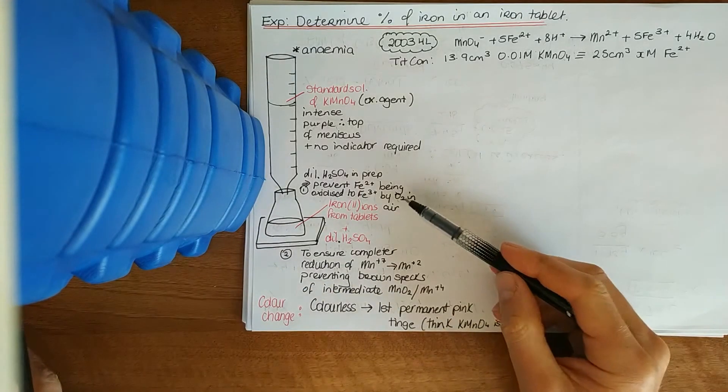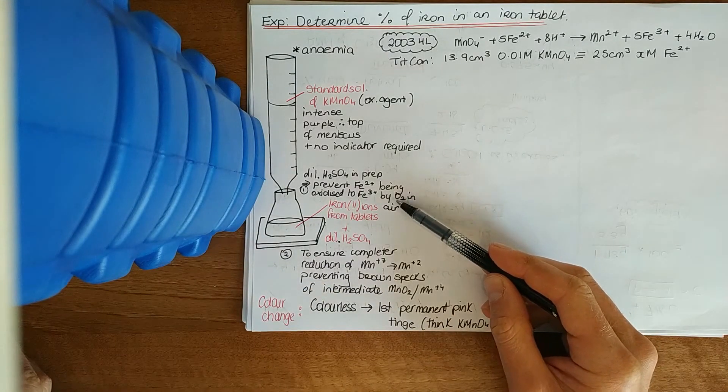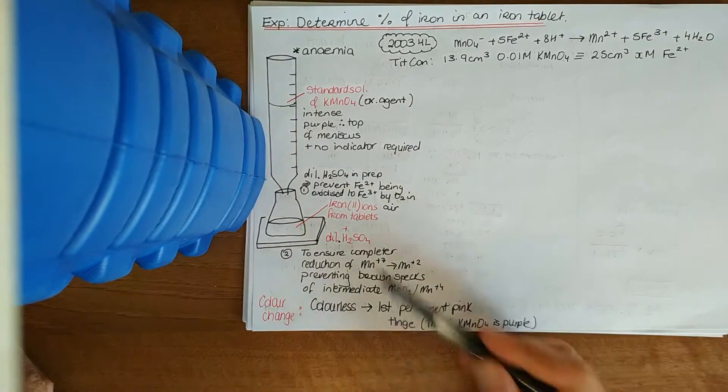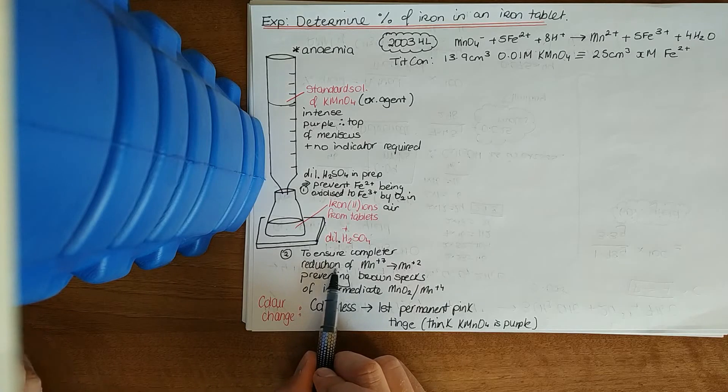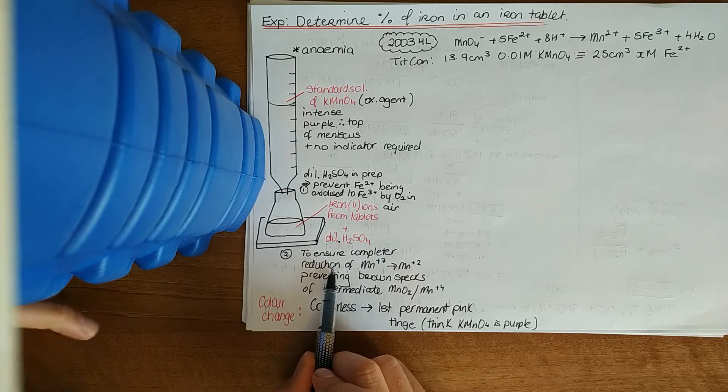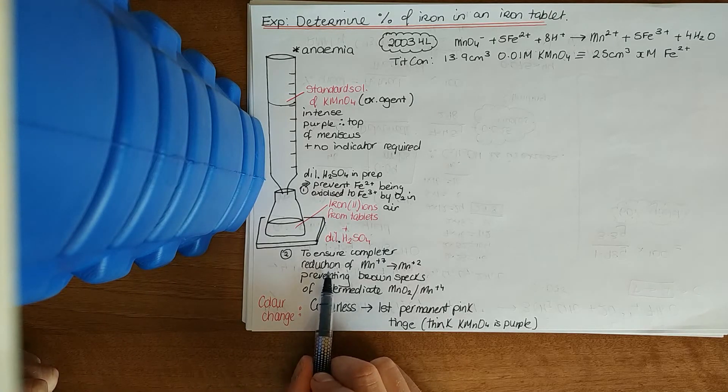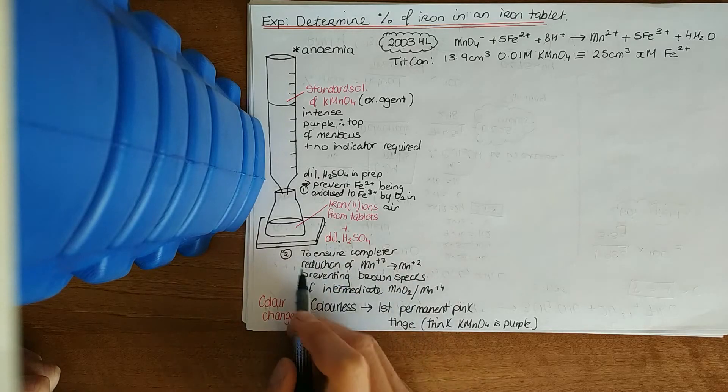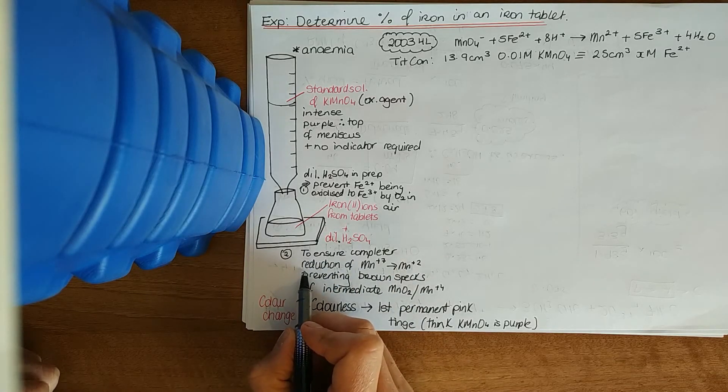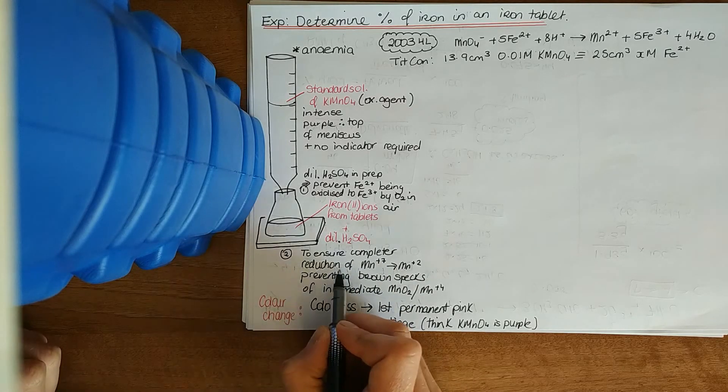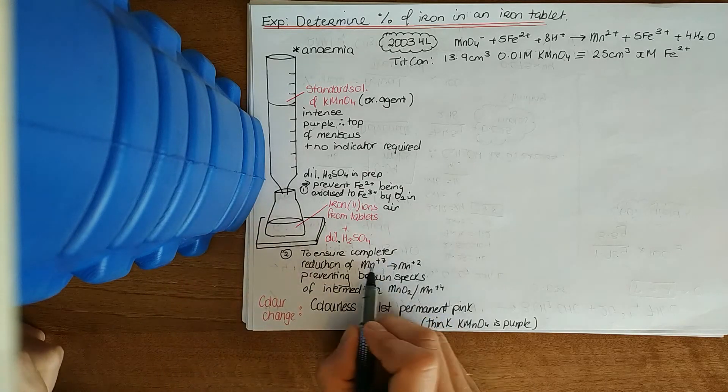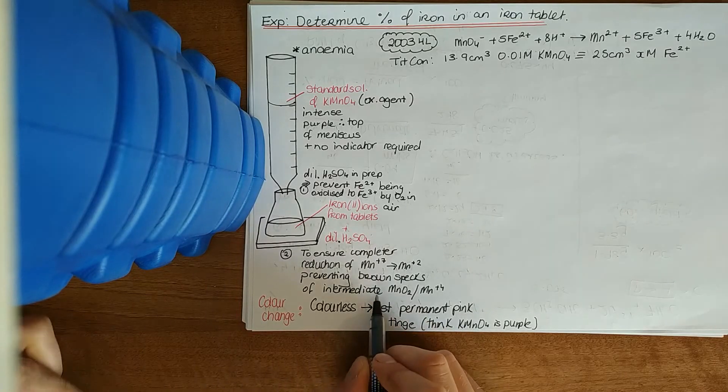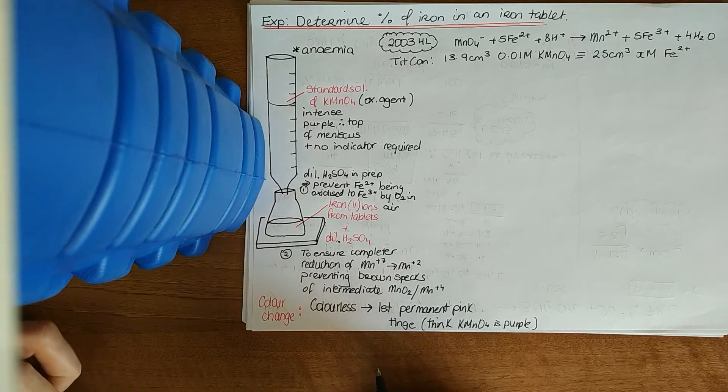Our two reasons: prevent early oxidation of Fe2+ to Fe3+ by oxygen in the air, and the second reason to ensure complete reduction. Remember reduction is a gain of electrons, that's our definition in terms of electron transfer, or decrease in oxidation number. In a sale, a reduction in price means the price has got smaller, a reduction in oxidation number here, the number's got smaller.